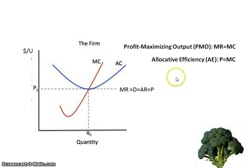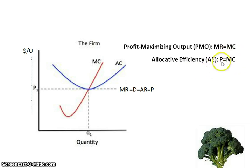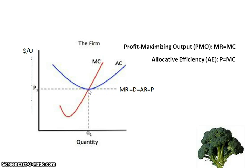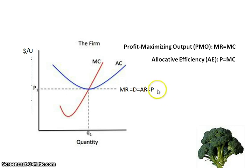Another efficiency is allocative efficiency — producing that right mix of goods. We've talked about it before with marginal benefit equals marginal cost, and also supply equals demand. The formula we use here for allocative efficiency is price equals marginal cost. This happens to be at the same spot as MR equals MC, which will always be the case for a perfectly competitive firm, because they produce where MR equals MC and MR is the same as price. Therefore, a perfectly competitive firm is always allocatively efficient.